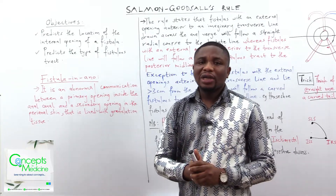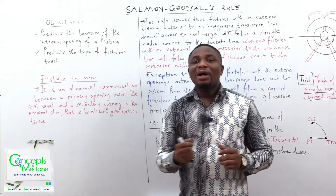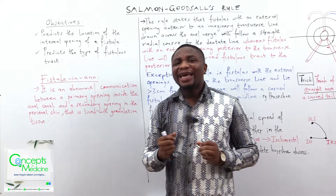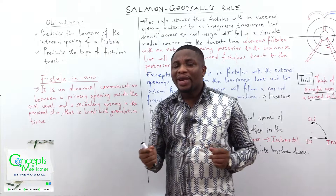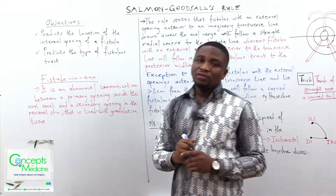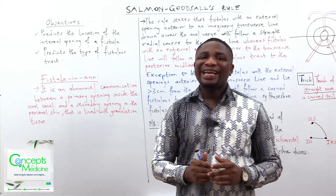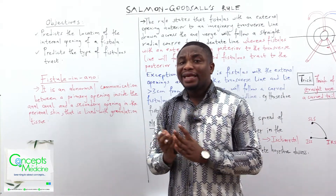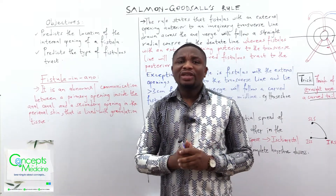What then is a fistula? When we say a fistula in ano, specifically, it is an abnormal communication between a primary opening in the anal canal and a secondary opening in the perianal skin, lined by granulation tissue. That is what we term as a fistula in ano. And the Salmon-Goodsall Rule would help us to know the internal opening of the fistula as well as determine the type of the fistula's tract.